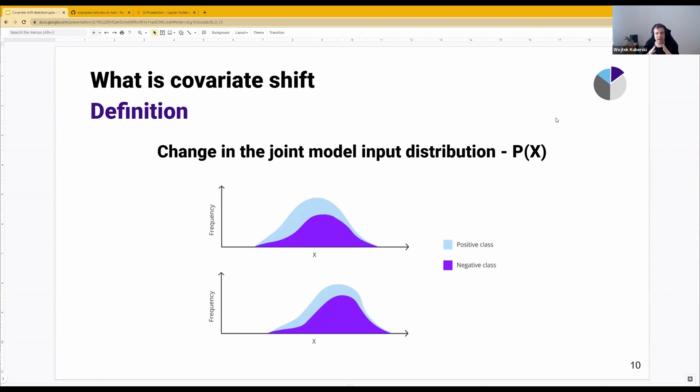That means that not only the model input distribution will change, but potentially also the target distribution is going to change. Because we might move from a region when there are more positive class instances to a region when there are more negative class instances. Like in the example here, we see that we have, in total, more negative class instances compared to before the shift.